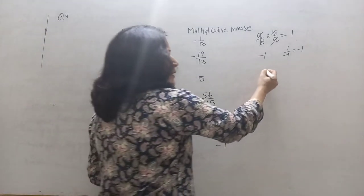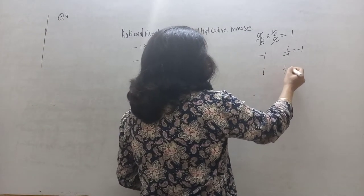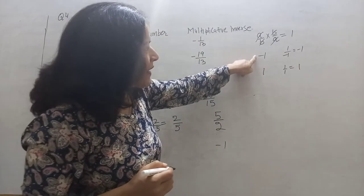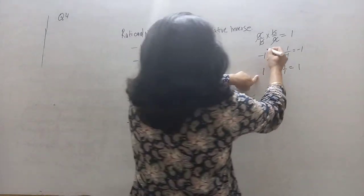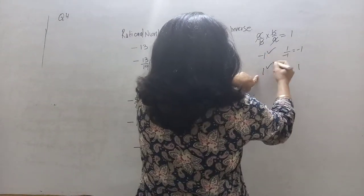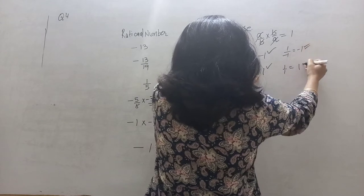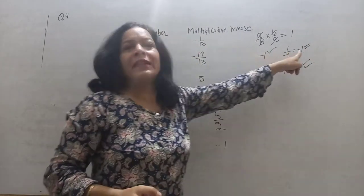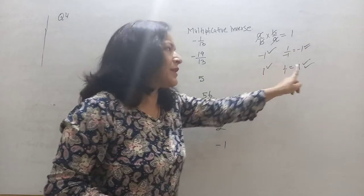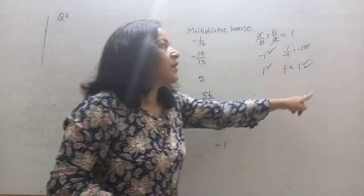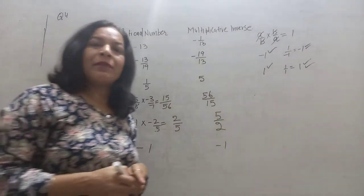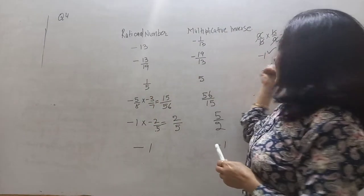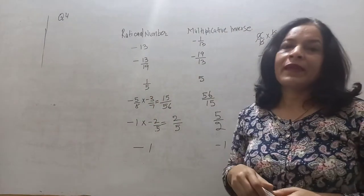1 upon minus 1 equals minus 1, so the multiplicative inverse of minus 1 is minus 1 itself. And the reciprocal of 1 is 1 upon 1, which equals 1. So minus 1 and 1 are the numbers whose reciprocals are the same as themselves.